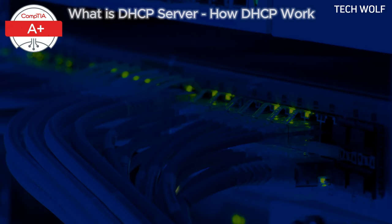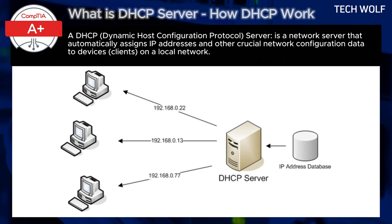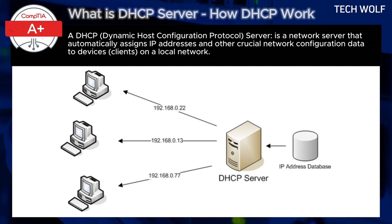What is DHCP? A DHCP, Dynamic Host Configuration Protocol Server, is a network server that automatically assigns IP addresses and other crucial network configuration data to devices or clients on a local network. The purpose of DHCP is to simplify network management by allowing devices to receive IP addresses and other required network information without needing manual configuration for each device.